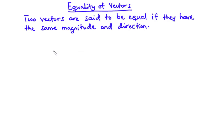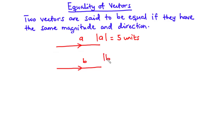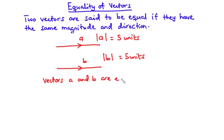Now let's consider these two vectors, vectors A and B. Assuming that we have vector A acting due east and vector A has magnitude 5 units. Also, let's assume that vector B is acting parallel to vector A and also has magnitude of 5 units. Since the two vectors A and B have the same magnitude and direction, we say that the two vectors are equal vectors. So vectors A and B are equal vectors.